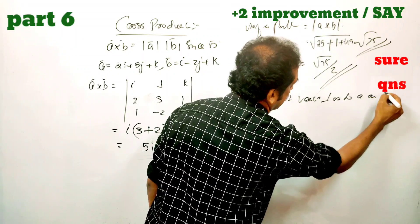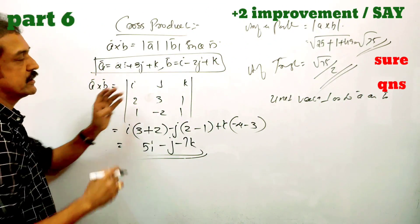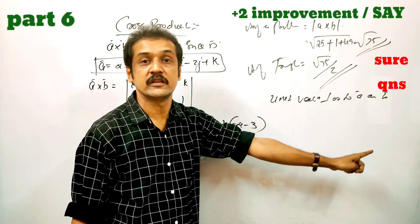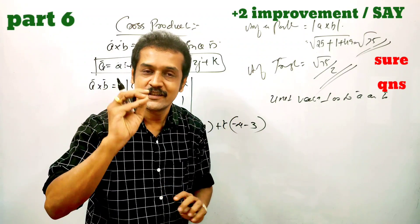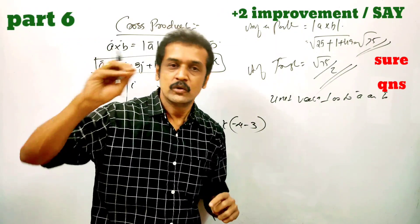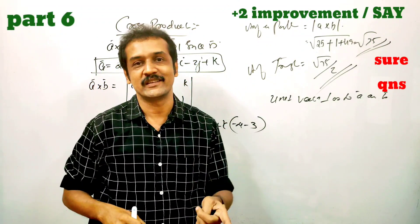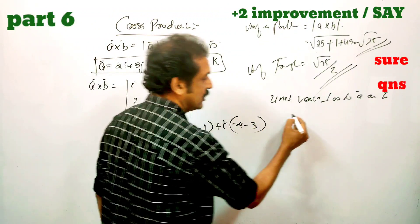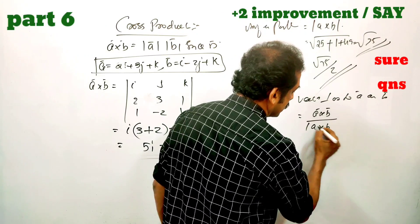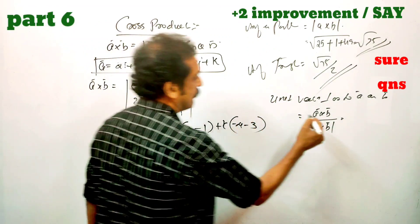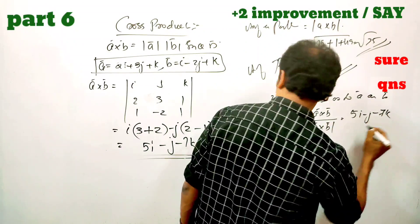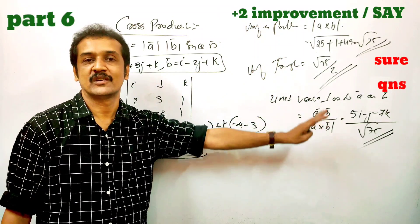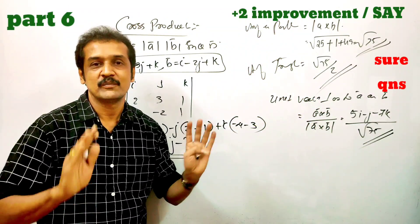The unit vector perpendicular to both A and B. Now we have the triangle area and parallelogram area. Next is a unit vector perpendicular to both A and B. The formula is A cross B divided by modulus of A cross B. A cross B is 5i minus j minus 7k, divided by root of 75. This is the unit vector.